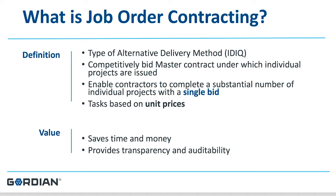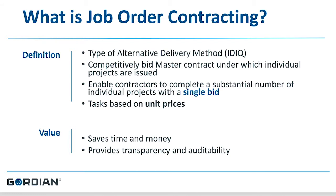Tasks in each one of the job order contracts are based on unit prices. Every unit price includes an allowance for labor, material, and equipment. The construction task catalog also has unit prices for the installation of an item and for the demolition of an item. The value proposition of job order contracting is that it saves the public agency that implements it both time and money.